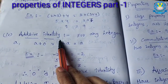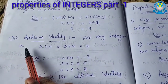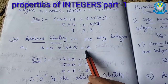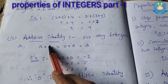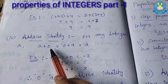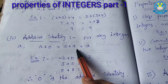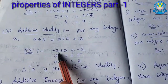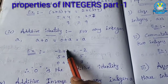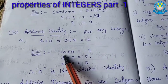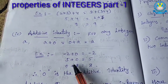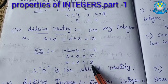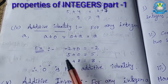The fourth one is additive identity. For any integer A, the condition is A plus 0 equals 0 plus A equals A. Here, 0 is the additive identity. A is any integer — A plus 0 or 0 plus A, the answer is A. For example, take minus 2: minus 2 plus 0 equals minus 2. If any number is added to 0, we get the same number. 5 plus 0 equals 5. 0 plus 8 equals 8. So 0 is the additive identity.